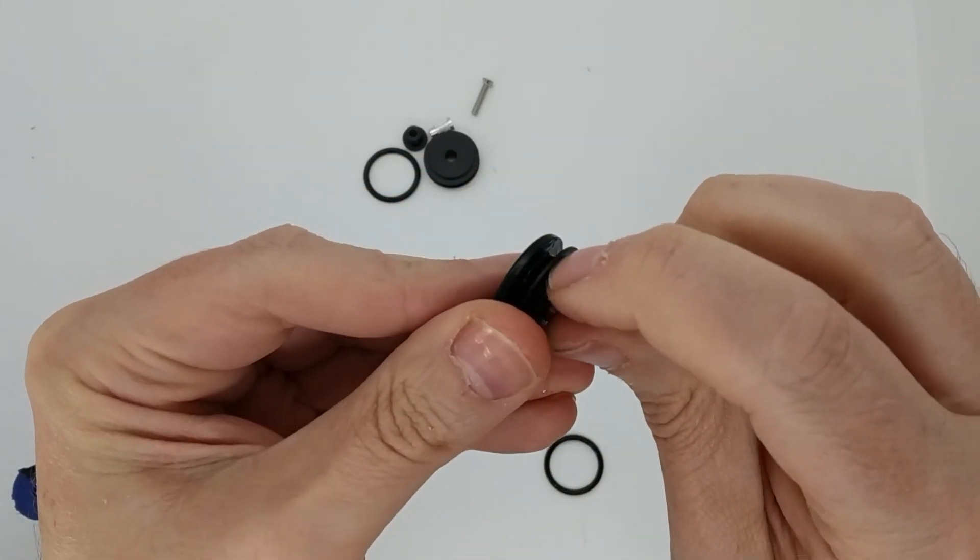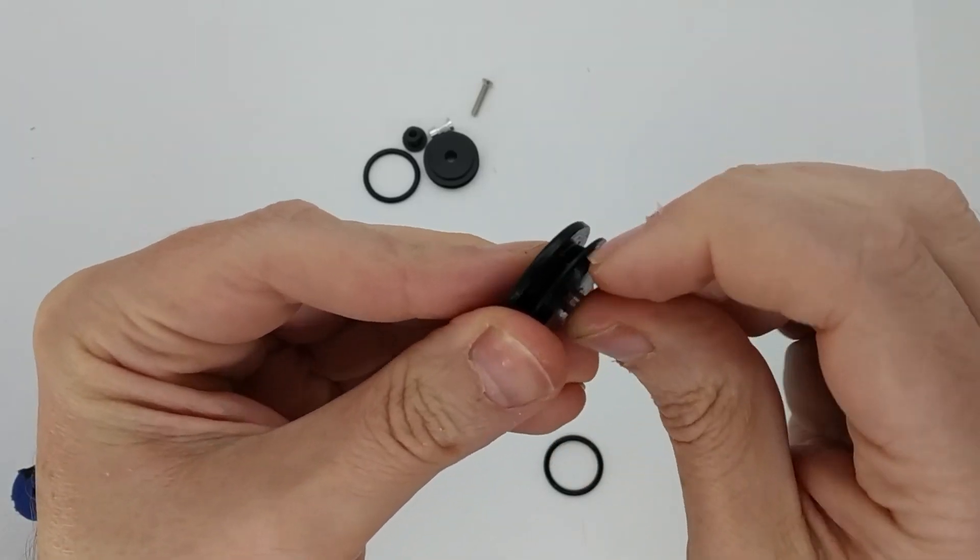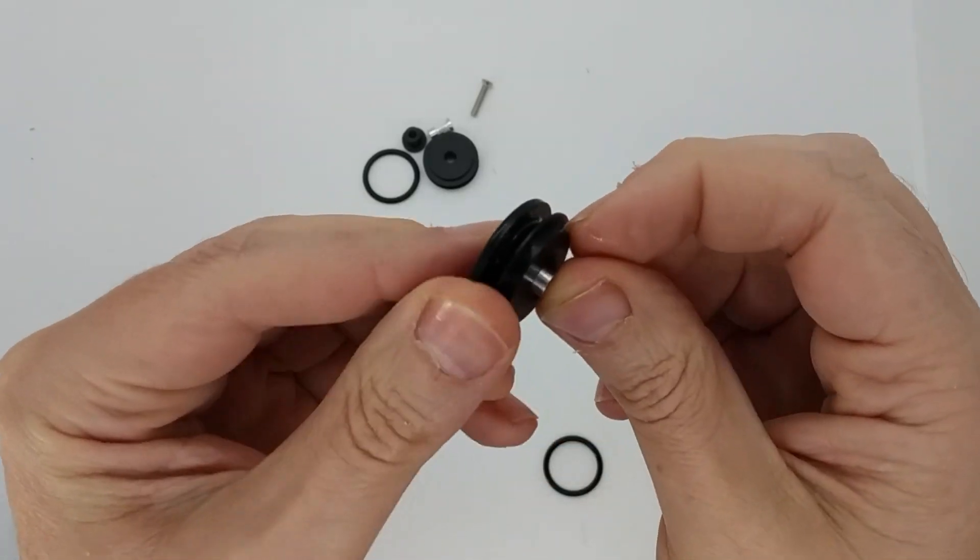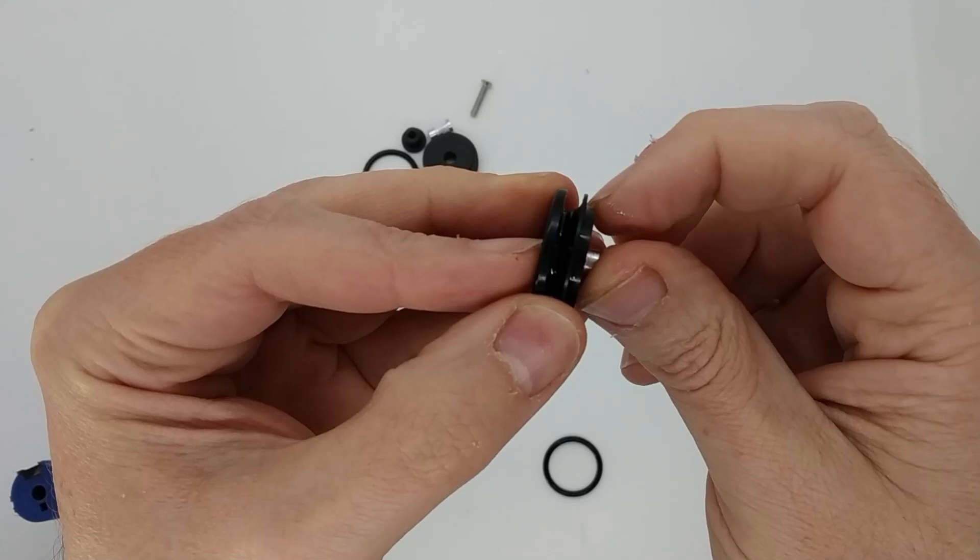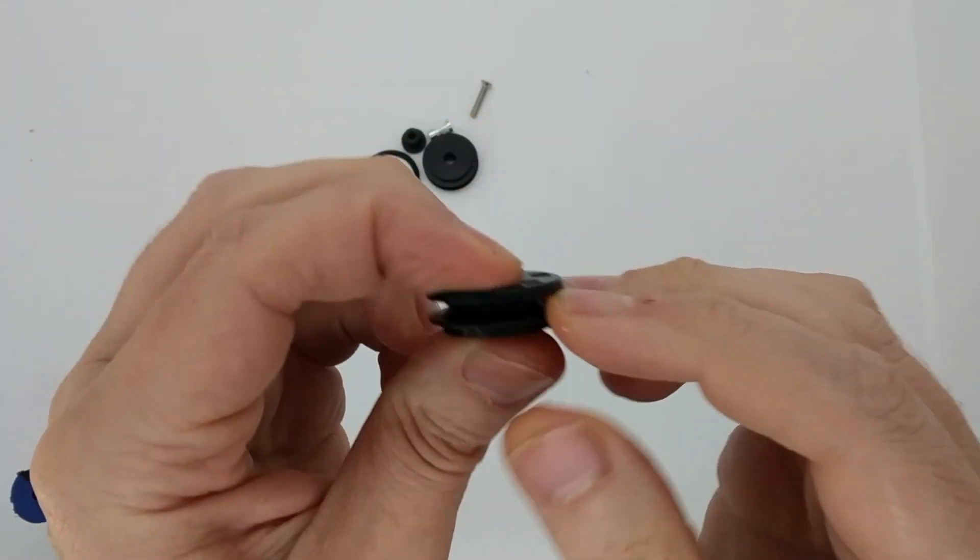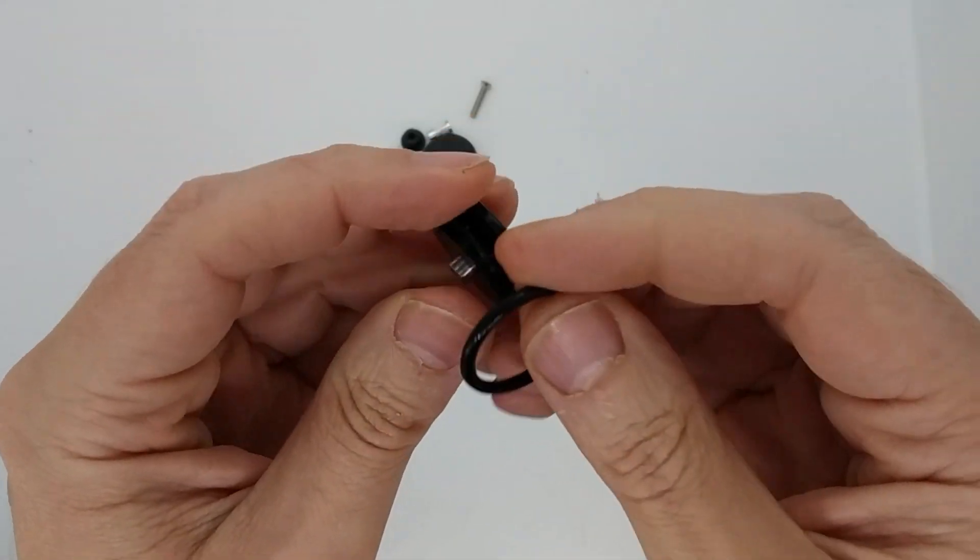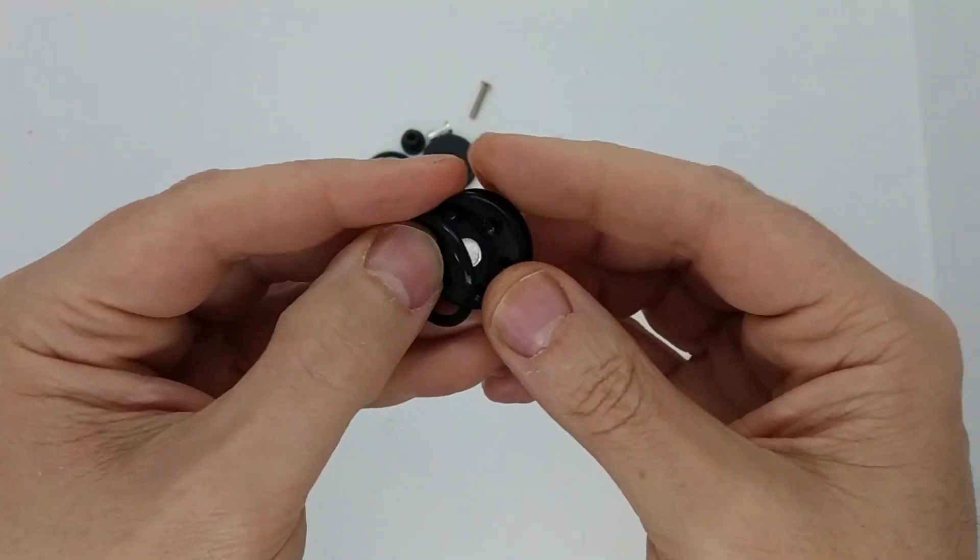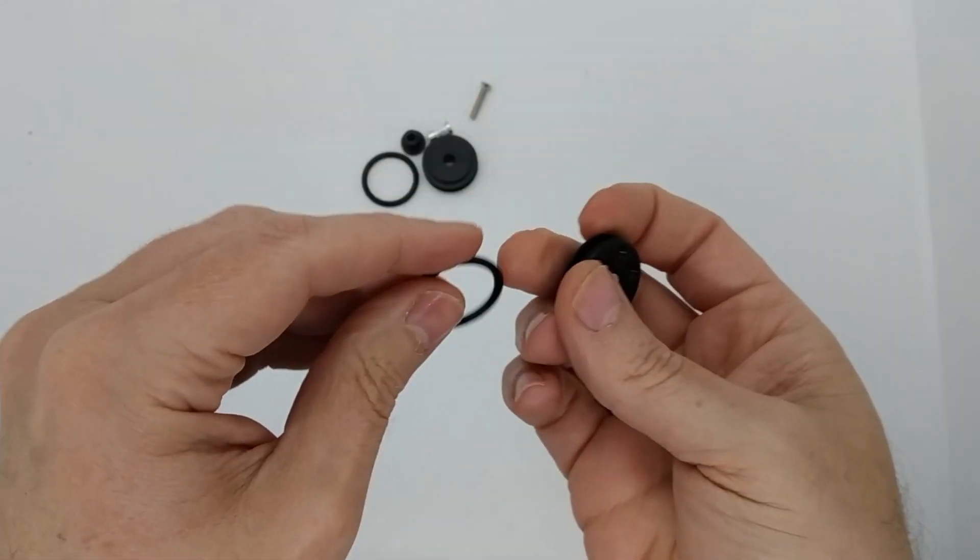This is something which tends to happen on a lot of plastic or POM or nylon piston heads - this bit here all around will slip. As soon as that goes, the o-ring has nothing to rest against when it's being pushed forward and it's completely useless.